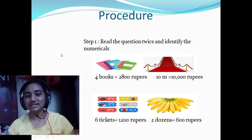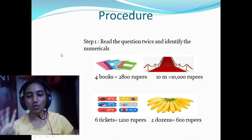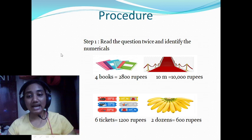Here it is given cost of four books is 2,800 rupees. 10 meters of that carpet costs 10,000 rupees. Six movie tickets cost 1,200 rupees. Two dozens of bananas cost 600 rupees.